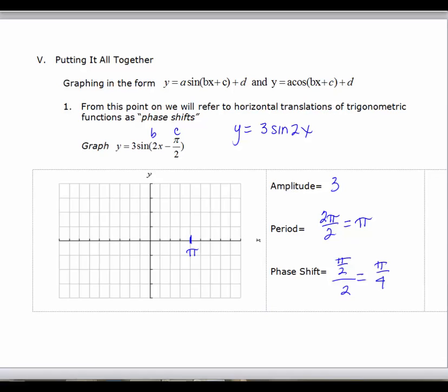And I know that the period for y equals 3 sine 2x would be pi. I know that I have zeros at the beginning, halfway, and at the end. So zeros here, here, and here. That would be pi over 2.